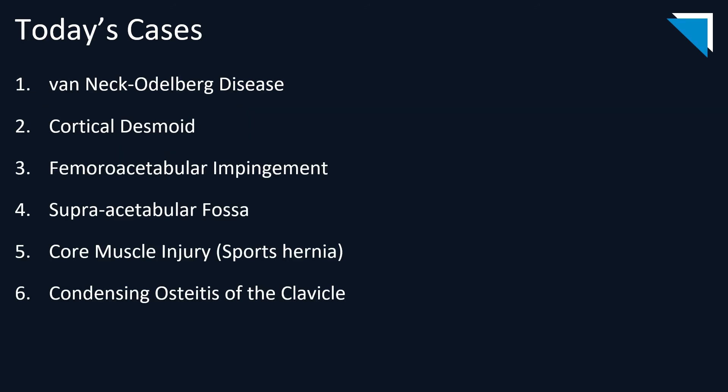Today we talked about six different cases. Van Neck-Aldenburg disease is usually left-sided and seen in young soccer players with asymmetrical expansion of the ischiopubic synchondrosis. Cortical desmoids present with medial knee pain and are a benign tug-related injury, not a tumor. Femoroacetabular impingement has three types — CAM, pincer, and mixed — and predisposes patients to early osteoarthritic changes, labral tears, and labral detachment.